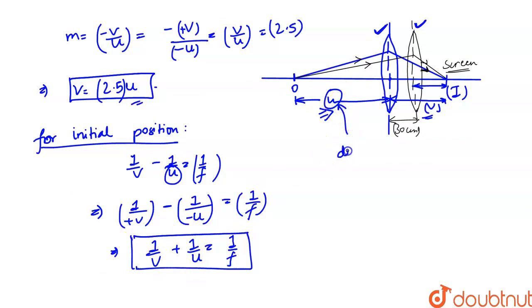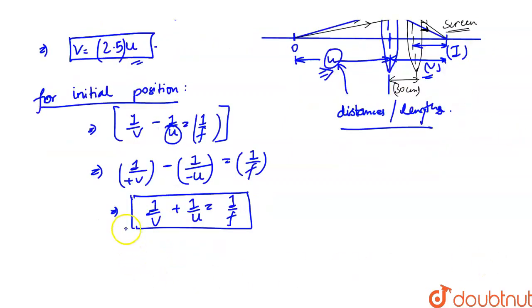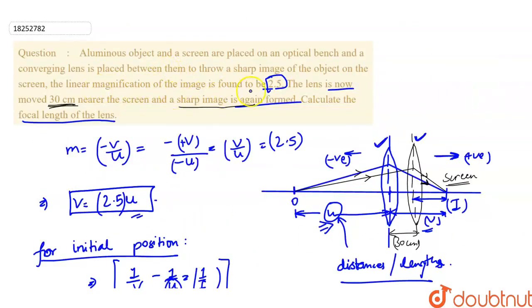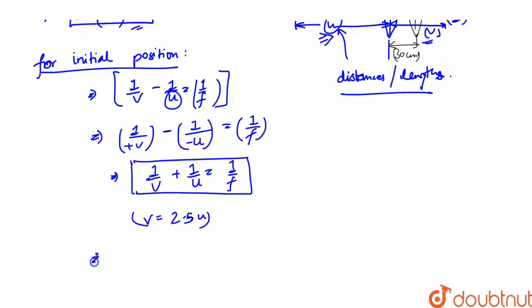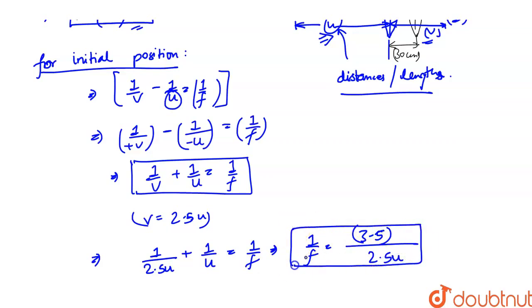We have the thin lens formula with proper sign convention—optical center, which side is positive, which side is negative. So this is our equation, but here we have v equals 2.5 times u. We can use this for the first case because it is given that the linear magnification is 2.5 in the first case. So 1 upon 2.5u plus 1 upon u equals 1 upon f. The f value has come to us: 1 upon f equals 3.5 divided by 2.5u.